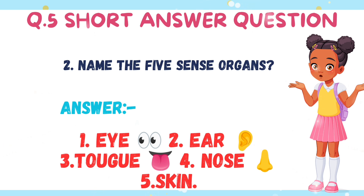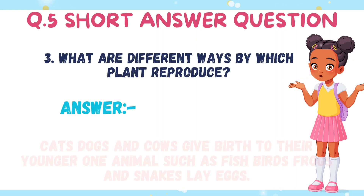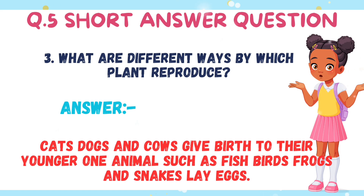Question five, sub-question three — what are different ways by which animals reproduce? Cats, dogs, and cows give birth to their young ones. Animals such as fish, birds, frogs, and snakes lay eggs for reproduction.